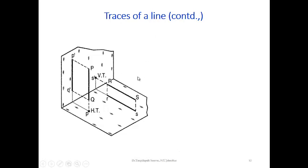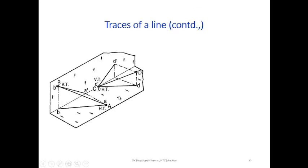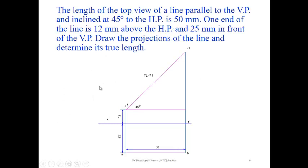The trace of the line is perpendicular to its front view. When the line is perpendicular to the horizontal plane, the top view projection is a point, and this point is both the top view and the horizontal trace. Similarly, when the line is perpendicular to the vertical plane, the front view is a point which also constitutes the vertical trace. If the line is inclined to both planes, we can find both the horizontal trace and the vertical trace — in a special case, both traces coincide at the origin.